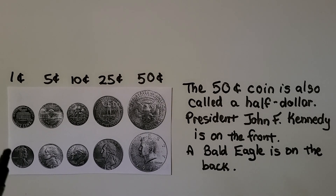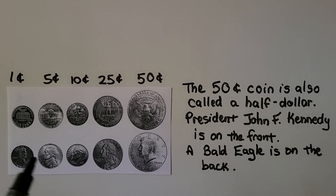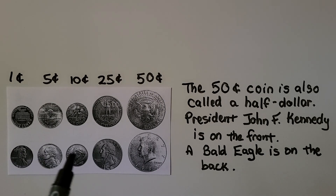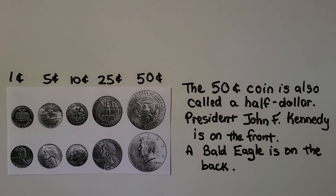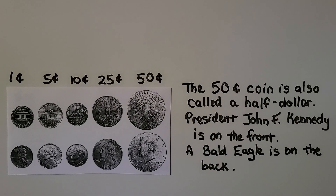So we've learned that a penny is one cent, a nickel is five cents, a dime is ten cents, and a quarter is twenty-five cents. There's also a coin called a fifty-cent coin, which is also called a half dollar. It has President John F. Kennedy on the front and a bald eagle on the back. You don't see too many of these, but they're around. Some people call them Kennedy half dollars.